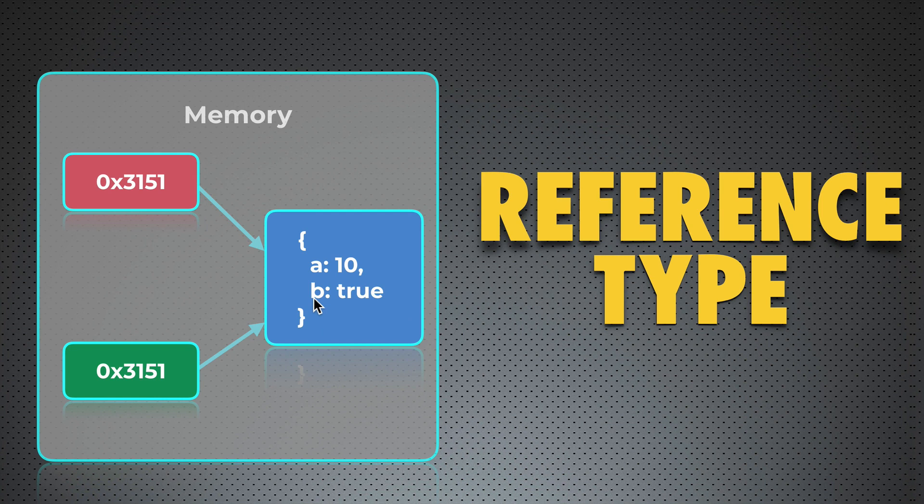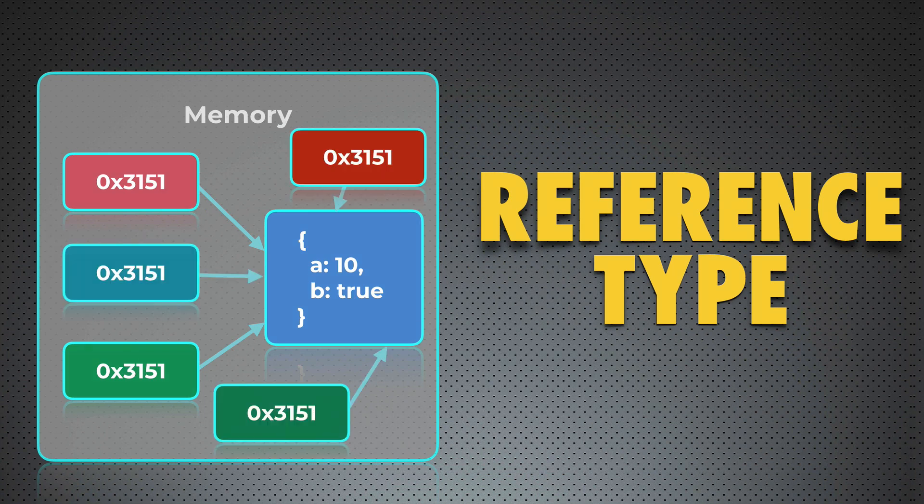But you may ask me, is it possible to have more than two pointers that point to the same place in memory? Yes, why not? That's nature of the reference value type, that is object.